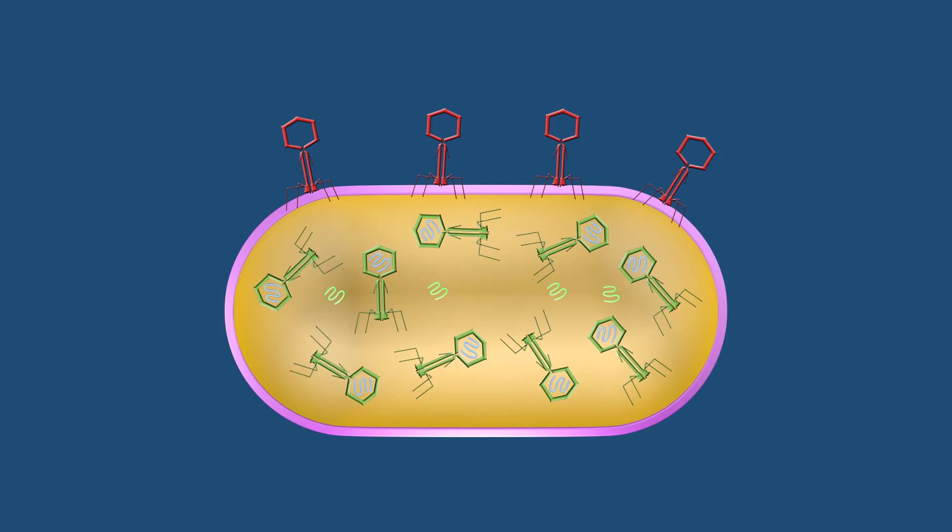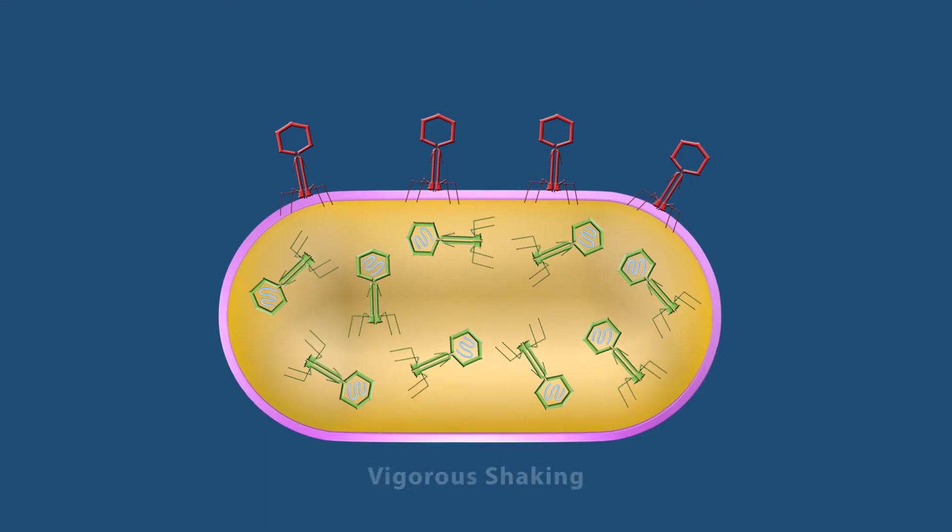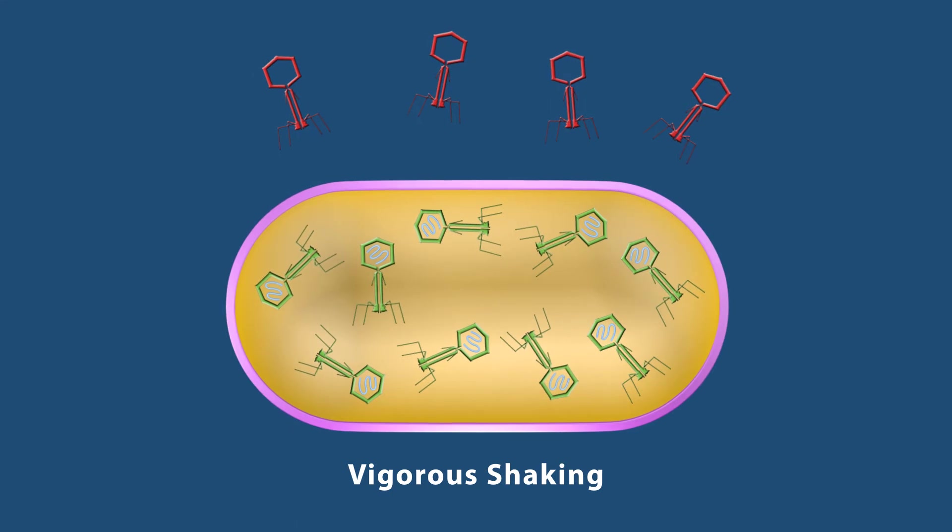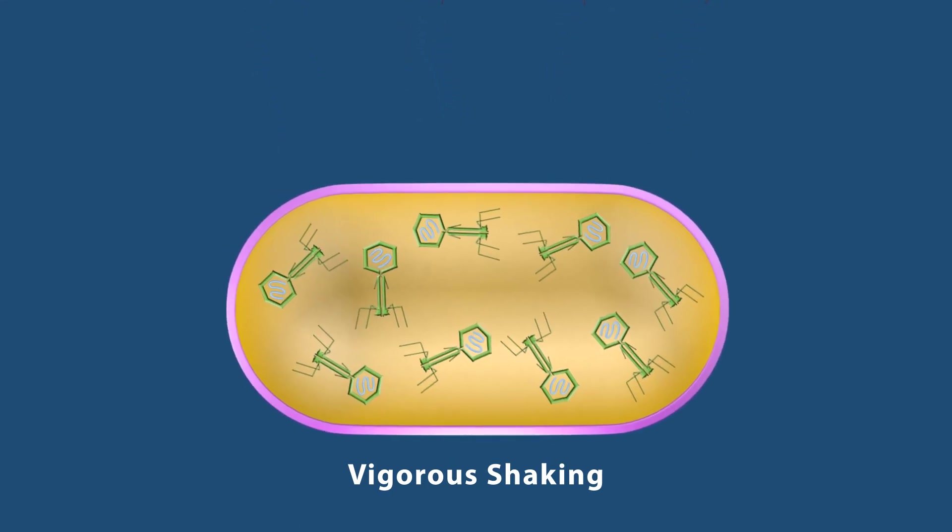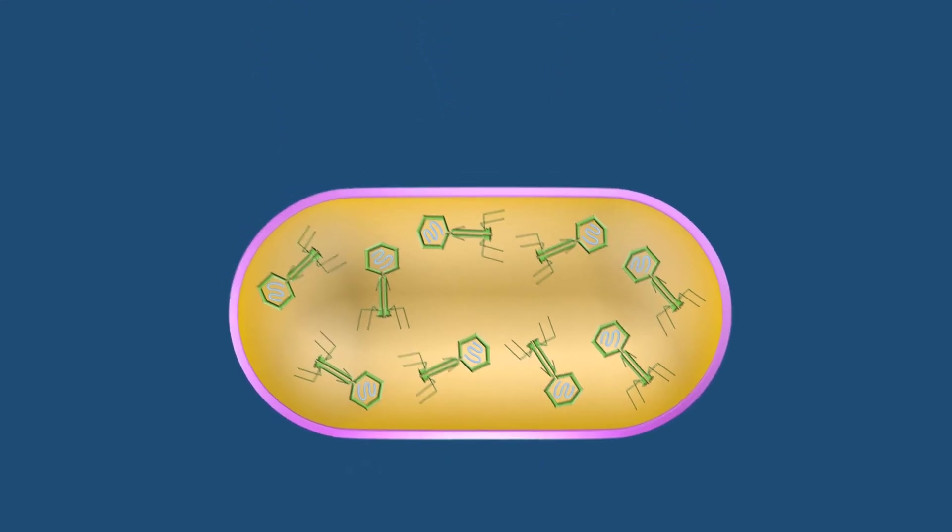The phage produced in these cells contained no radioactivity. The vigorous shaking caused the empty protein coats to be removed but did not interfere with the production of new phage in the cell.